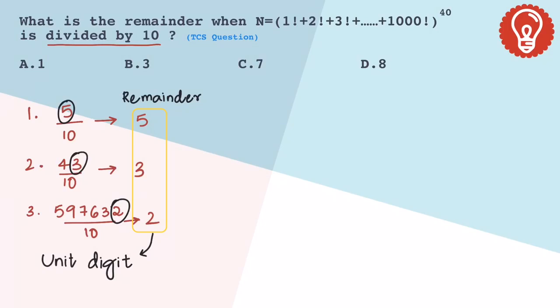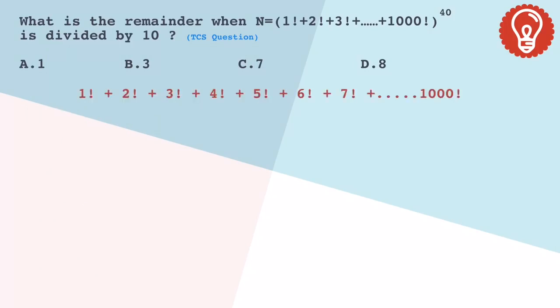So here we need to find the unit digit of the equation N. And in equation N, let's only take the factorials and forget about the power 40 for a moment.